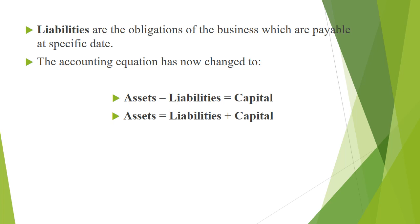Now the accounting equation is: Assets minus Liabilities equals Capital. Some assets are resources supplied by outsiders — that means liabilities are obligations. Moving liabilities to the right side, we get: Assets equals Liabilities plus Capital. These two accounting equations are: Assets minus Liabilities equals Capital, and Assets equals Liabilities plus Capital.